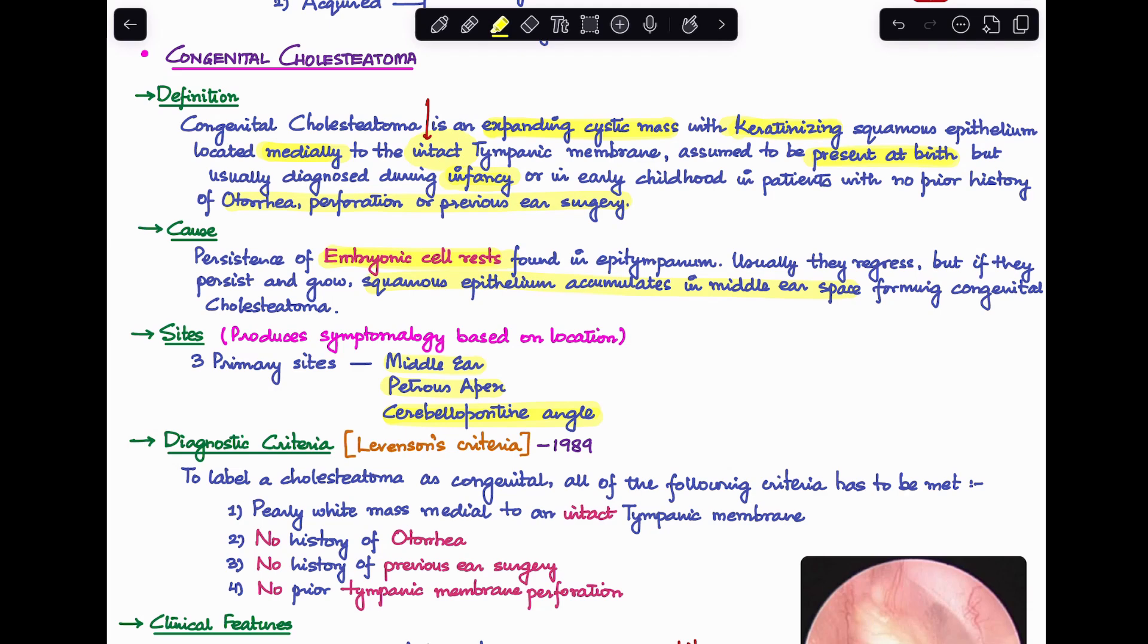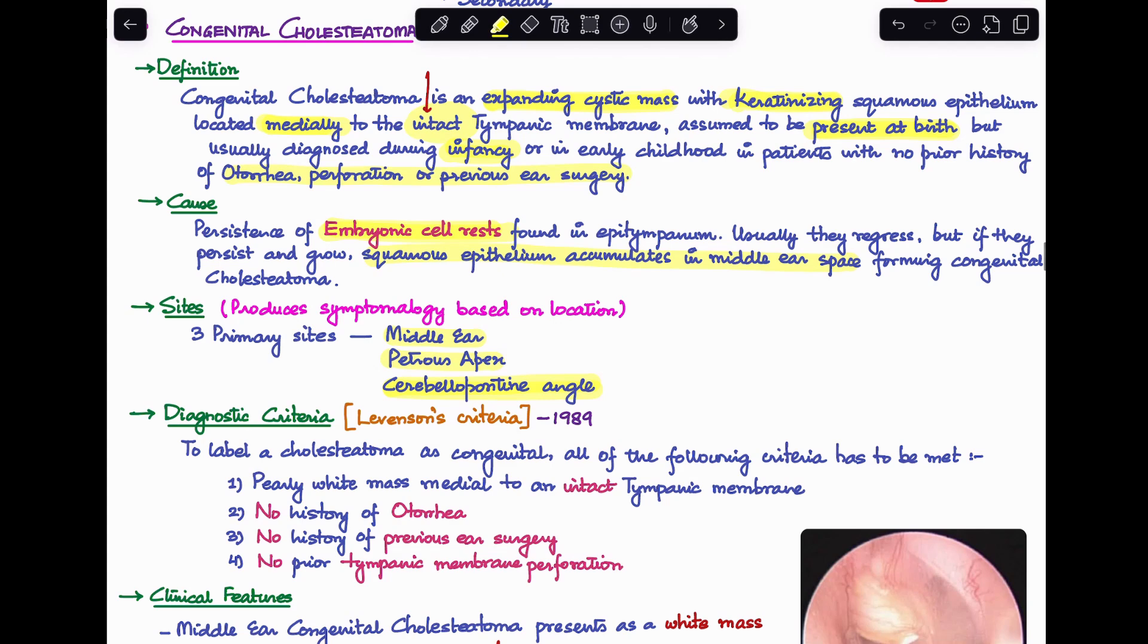There's a criteria called Levinson's criteria which came out in 1989, which basically gives the diagnostic criteria to label a cholesteatoma as congenital. There are four criteria and all of them have to be met for it to be diagnosed as congenital cholesteatoma.